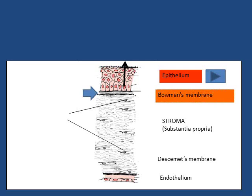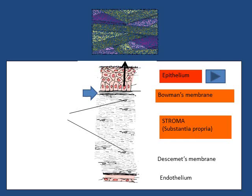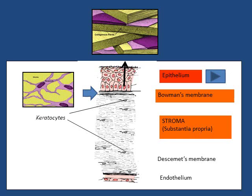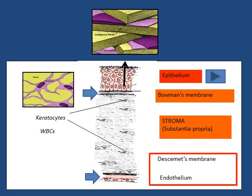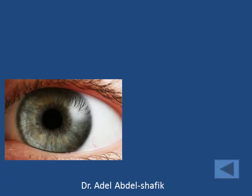The second layer is Bowman's membrane, which is the most external layer of the stroma. If there is some injury to Bowman's membrane, a permanent opacity will form. Then comes the stroma, or substantia propria. It is formed of collagen fibers, especially arranged and compact, and in between the fibers we find the keratocytes — the corneal cells — as well as wandering white blood cells. On the back of the cornea we have Descemet's membrane and the endothelium. The endothelium of the cornea cannot regenerate.